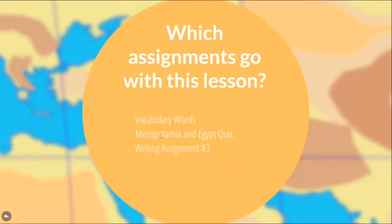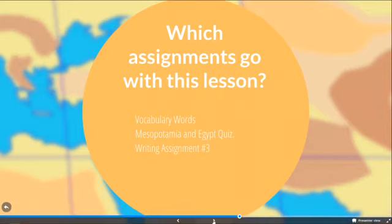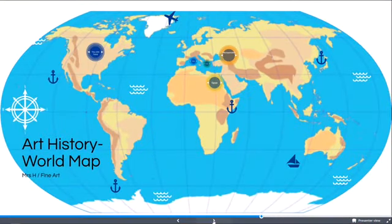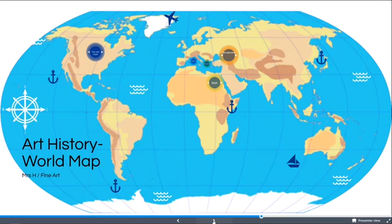Writing assignment three encompasses a lot of stuff we're going to talk about this week and next week, so keep that in mind — you don't have to do it yet. Now go ahead and learn some more things about Mesopotamia. That concludes the introduction to ancient Mesopotamia. Go ahead and get started on your reading, and hopefully you learn a few things. I'll see you next time.